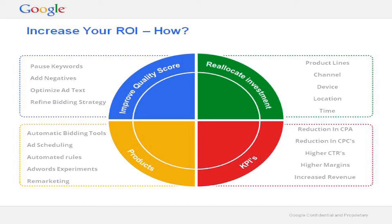If a client comes to you and says their goal is ROI — they want to improve the performance of the AdWords account — there are a couple of key strategies you're automatically going to look towards implementing. At a very broad level, the two things you can do to improve ROI are: number one, optimize the account to improve quality score, which is more of a long-term play. The second thing you can do to improve ROI straight off the cuff is on the cost side — if you reduce your CPCs or reallocate investment across various channels, you can immediately have an impact on the ROI of the account.